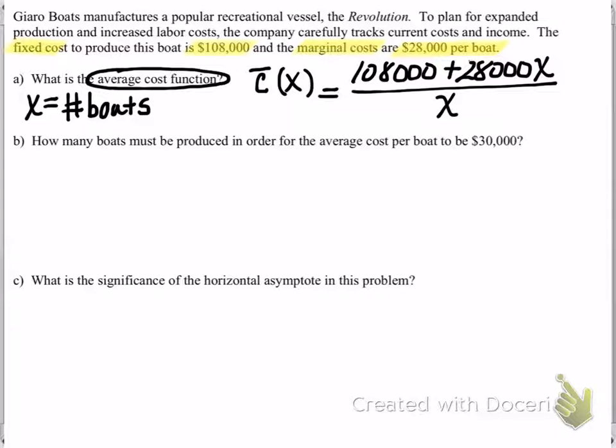Part B. How many boats must be produced in order for the average cost per boat to be $30,000? So here we're given the average cost and we're looking to solve for how many boats. In other words, we're solving for x given a C value.